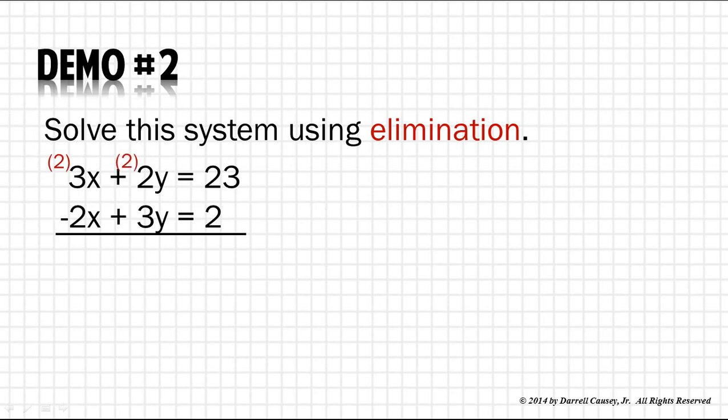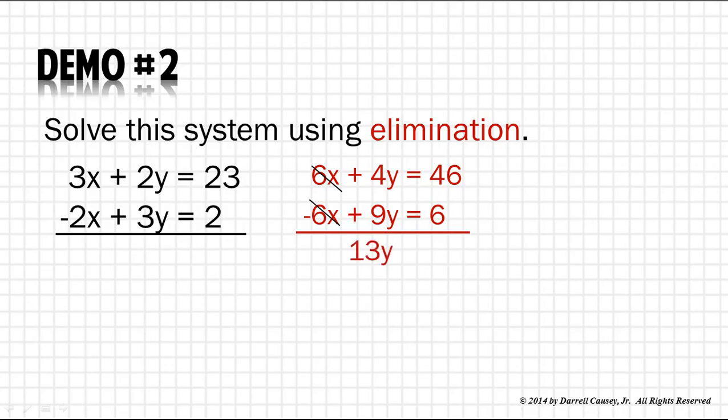I'm going to multiply everything in the top one by 2, which gives me 6x plus 4y equals 46. Then I'm going to multiply everything on the bottom by 3, which gives me negative 6x plus 9y equals 6. Cancel out the 6's, and then 4 plus 9 is 13, and 46 and 6 is 52. Divide both sides by 13, and we get y equals 4.